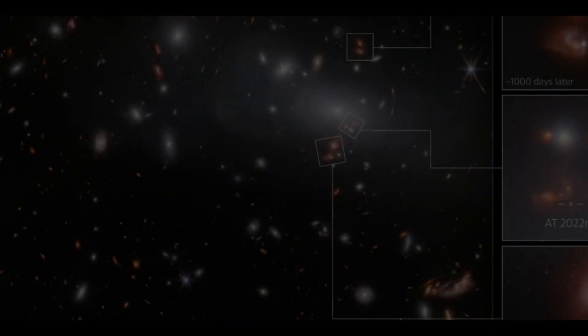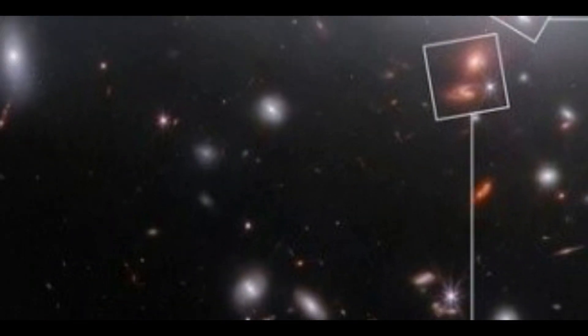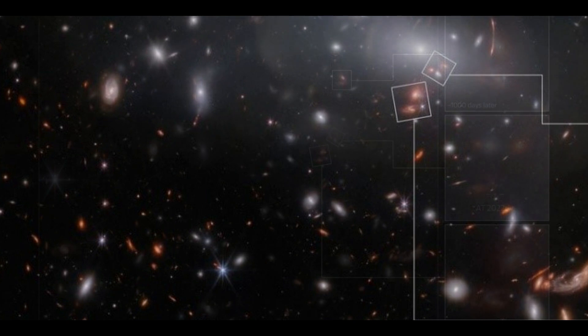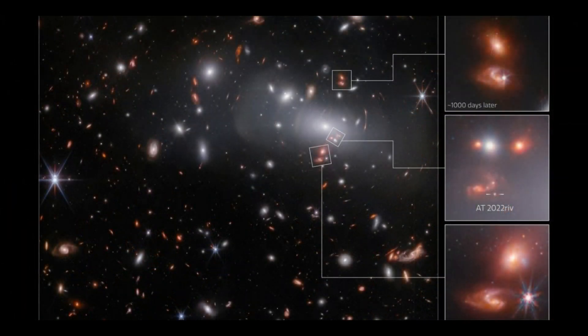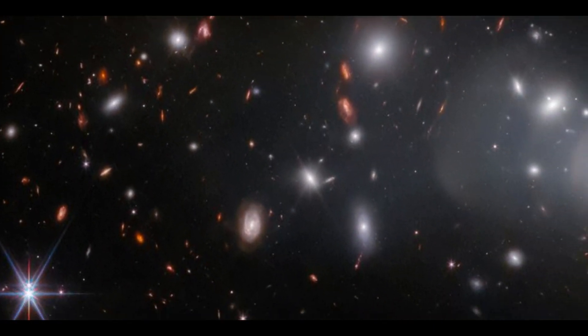The James Webb Space Telescope captured this seemingly time-defying image thanks to the tremendous gravitational effect of a foreground galaxy cluster and a light-bending phenomenon described by Albert Einstein over a century ago known as gravitational lensing.